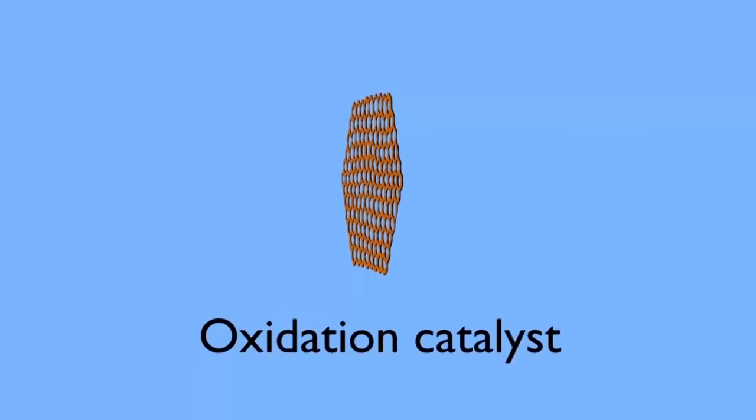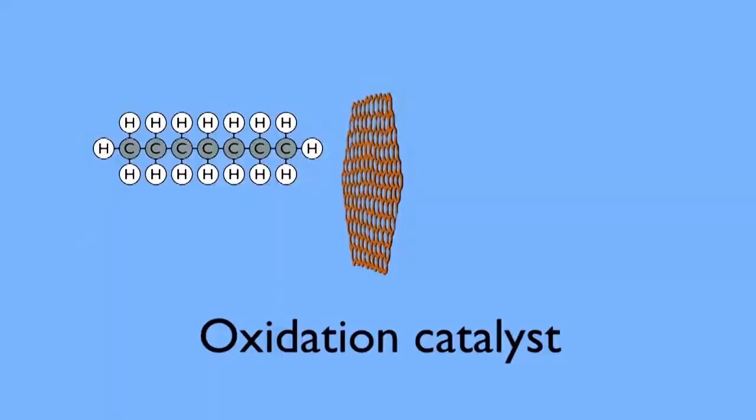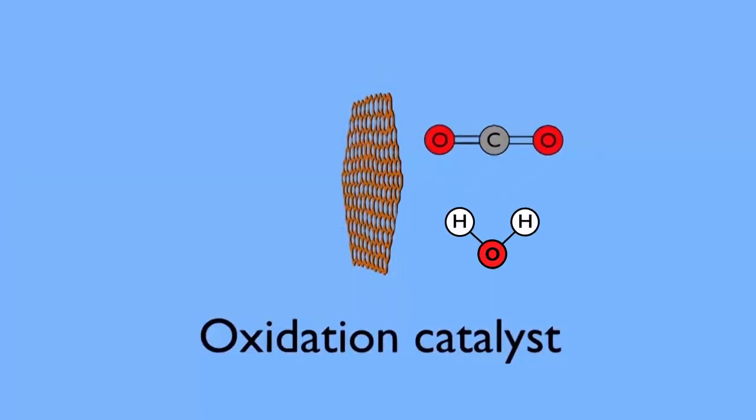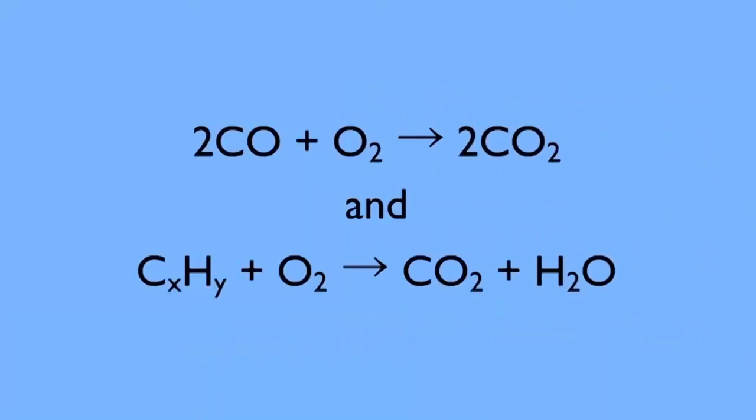The oxidation catalyst is the second stage of the catalytic converter. It oxidizes the unburned hydrocarbons and carbon monoxide by burning them over a platinum and palladium catalyst. The equation for this is shown here.